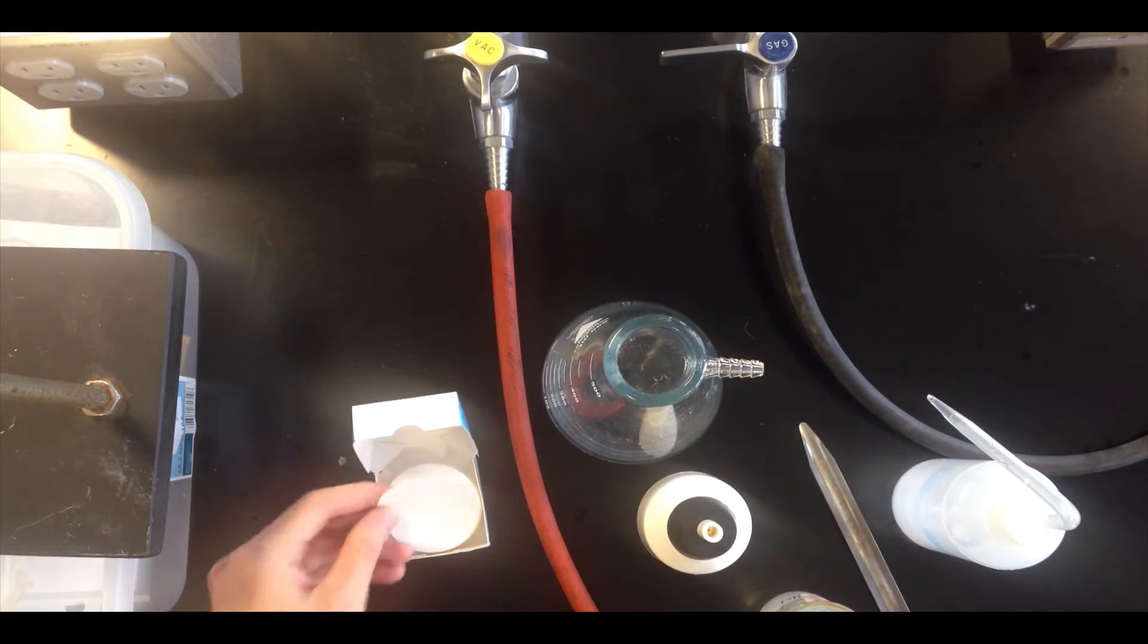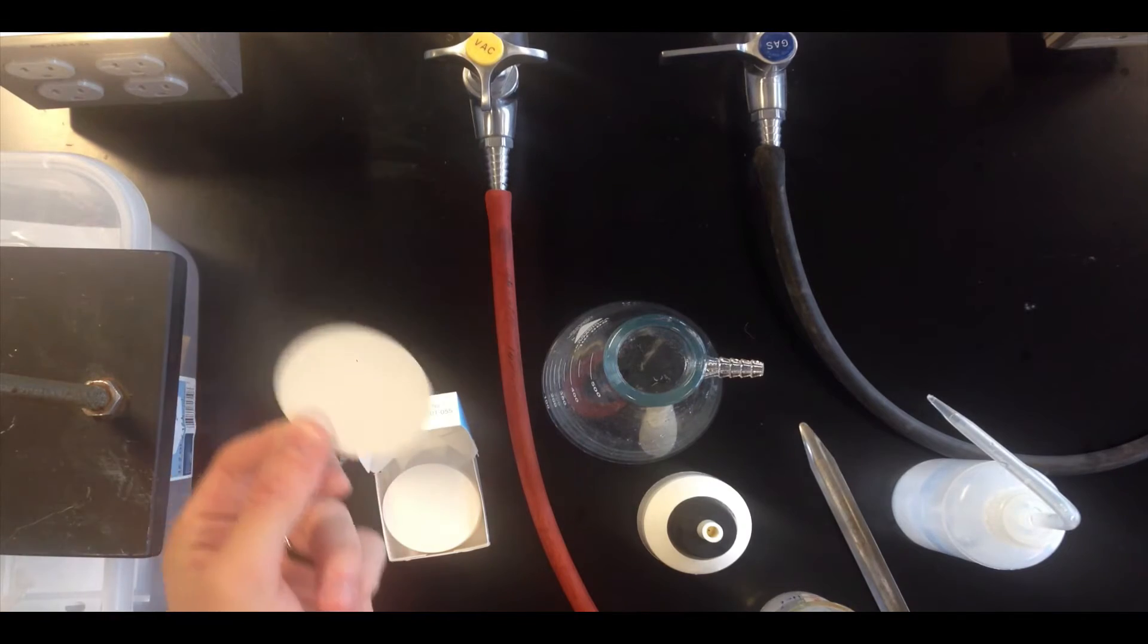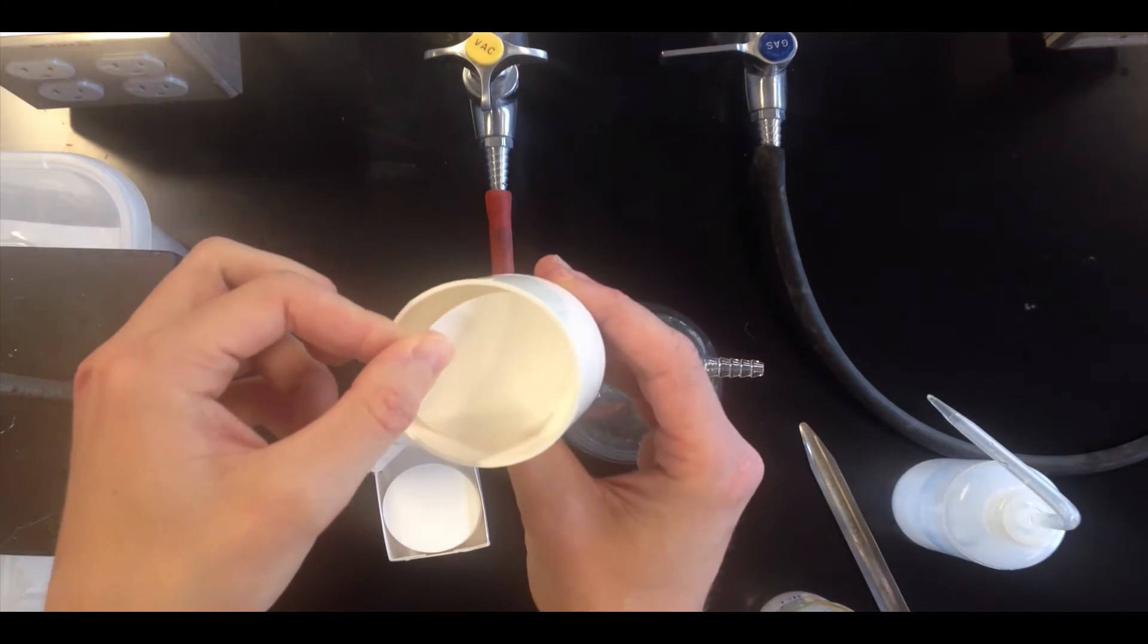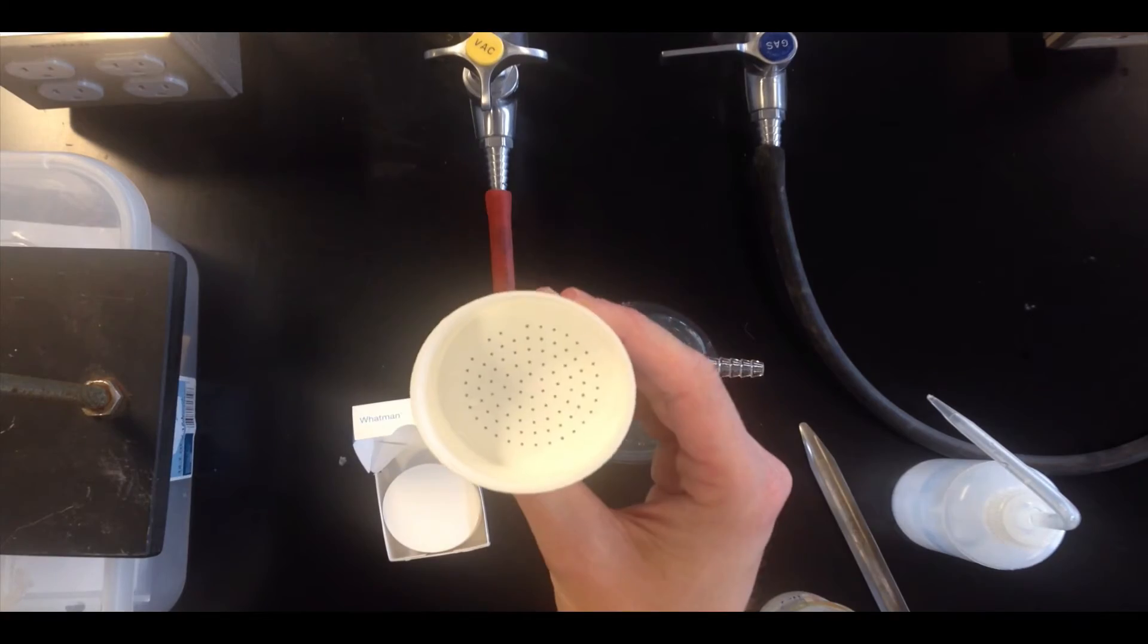The third necessary ingredient here is filter paper, and the filter paper is sized to match the cylindrical part of the Buechner funnel.